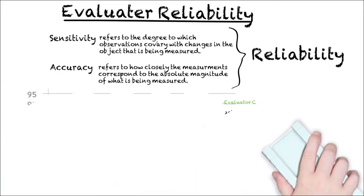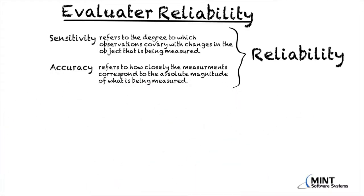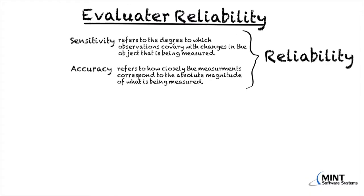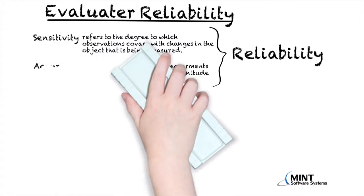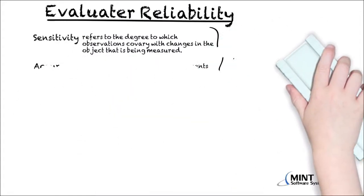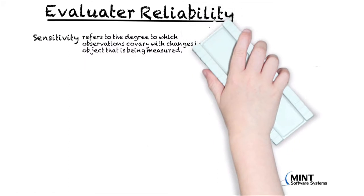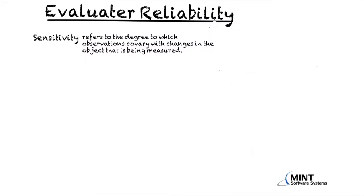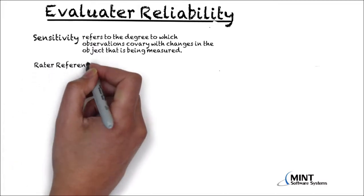Now we want to discuss two methods for assessing the reliability of observations. We will start by talking about sensitivity. There are two ways to assess sensitivity. The first one is the so-called rater-referent reliability.